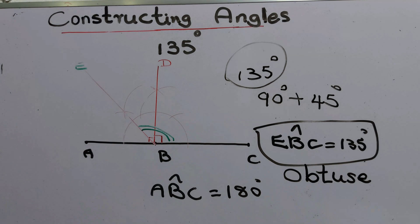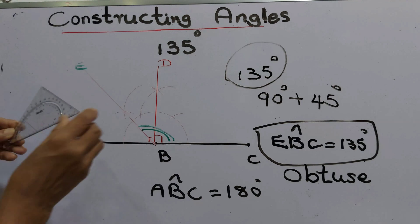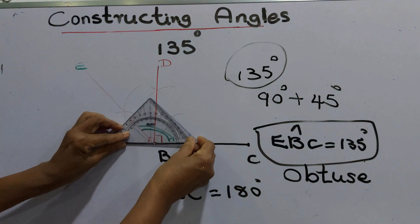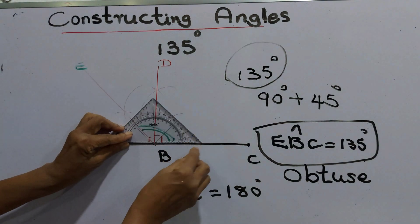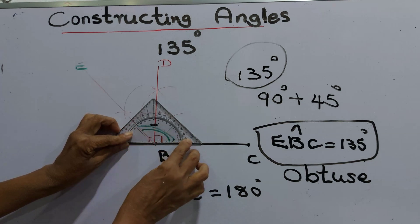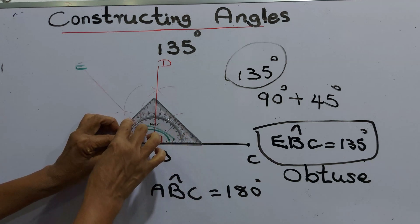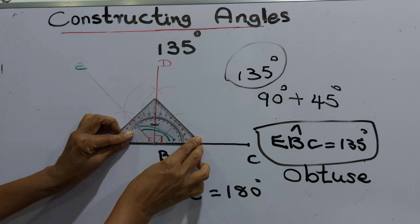We can measure the angle using the protractor. Keep the protractor's zero line on BC. It tells us that is 135 degrees — 130 here, 135 degrees. It confirms 135 degrees.